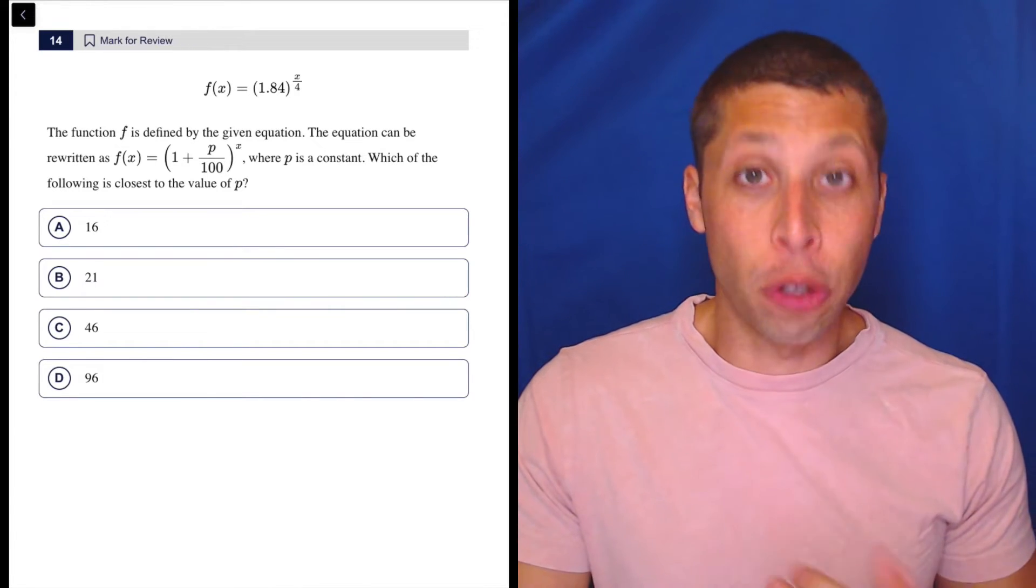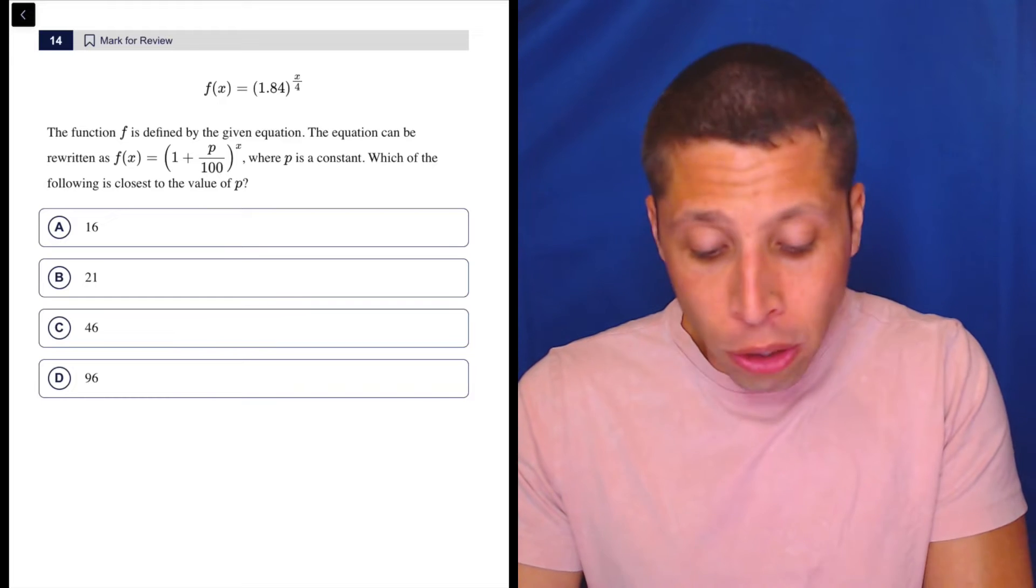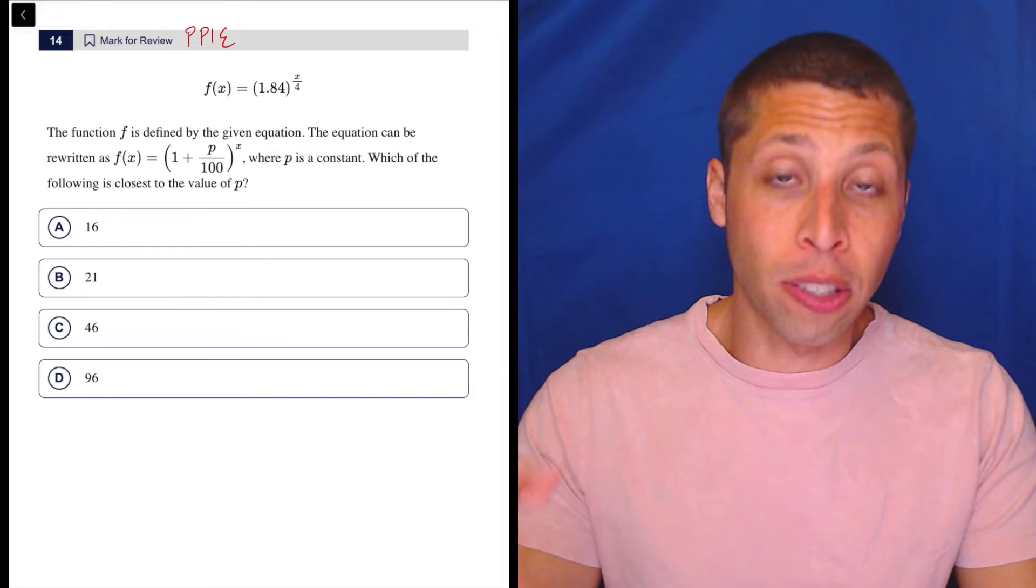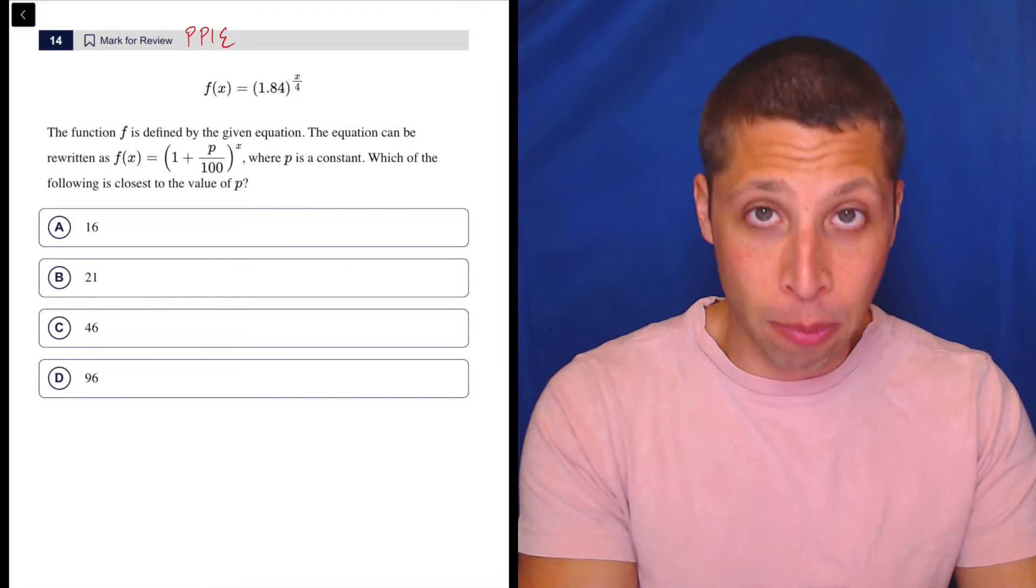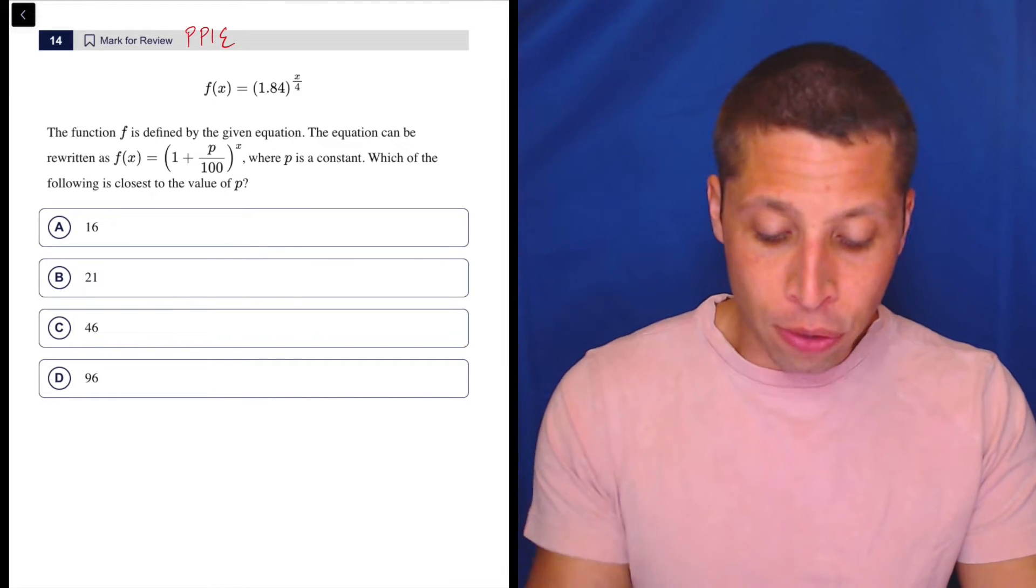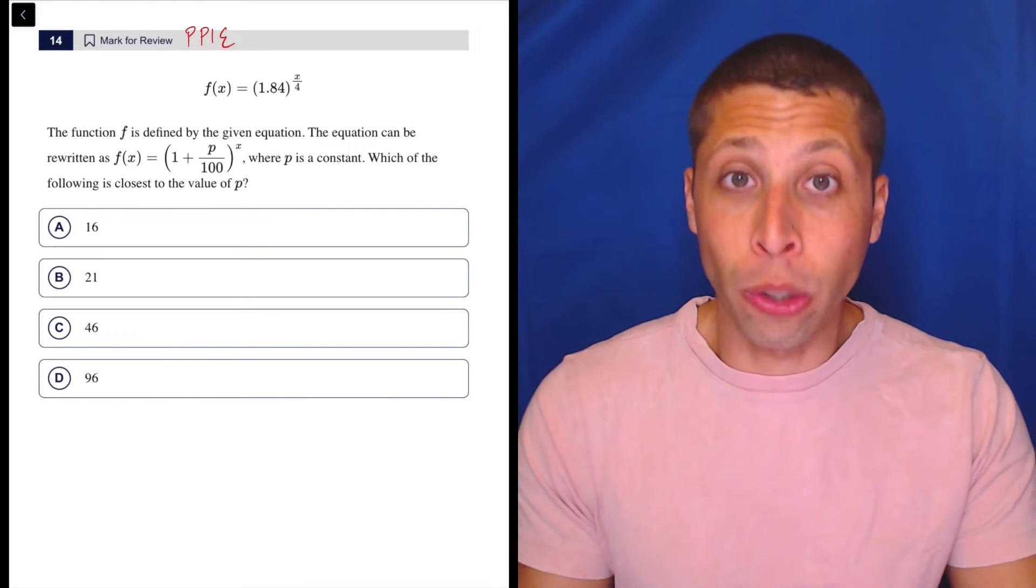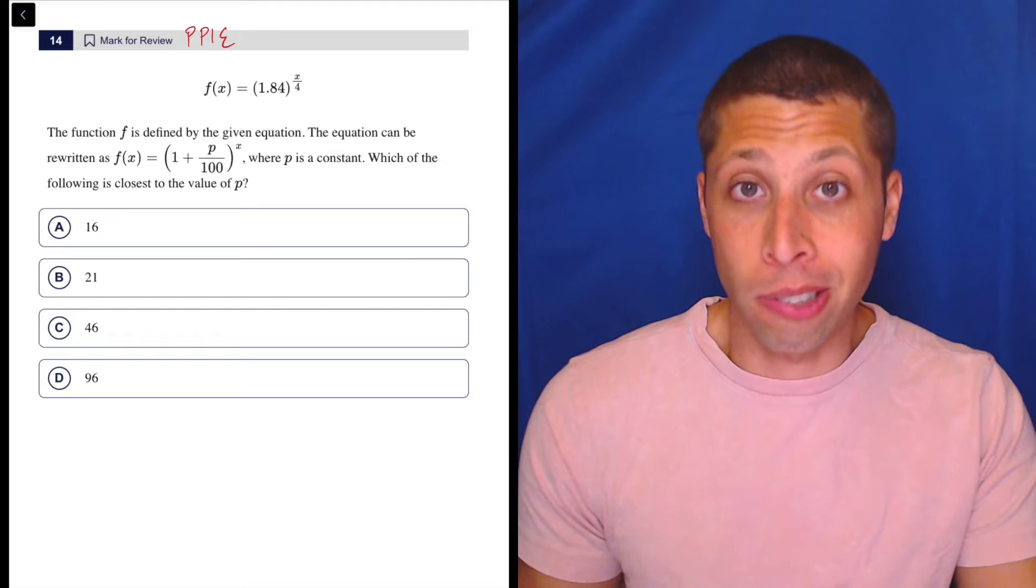So the better way to handle this is to plug points into equations. We could also use Desmos. We could basically guess and check a little bit. We could put this original f of x equation into Desmos, then put in this version with the p and keep substituting in all the different answer choices for p and just see which one looks closest.